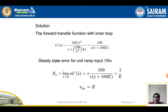G'(s) = (100/s²) / (1 + (100/s²)·ks), which simplifies to 100 / (s·(s + 100k)). For unit ramp, Kv = limit s tends to 0 of s·G'(s) = s·100 / (s·(s+100k)). After cancellation, Kv = 100/(100k) = 1/k. Therefore, e(s) = 1/Kv = k.